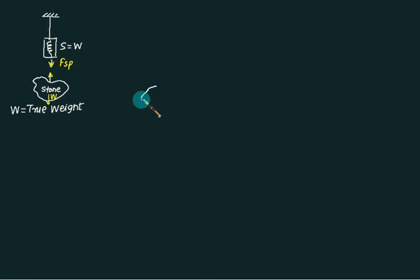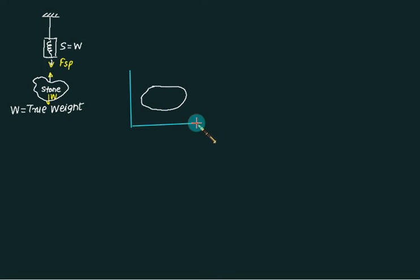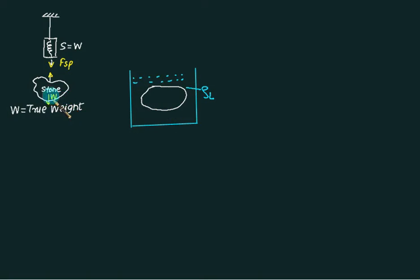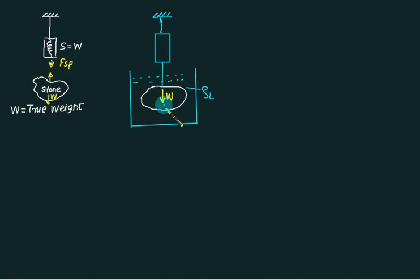Now suppose the same stone is submerged in water. Since it is completely submerged, it will experience a buoyant force, where ρ_L is the density of the surrounding fluid. If we measure the weight using a spring balance again, this time the spring balance will record a value less than the true weight. The weight acts vertically downward and the buoyant force acts vertically upward.